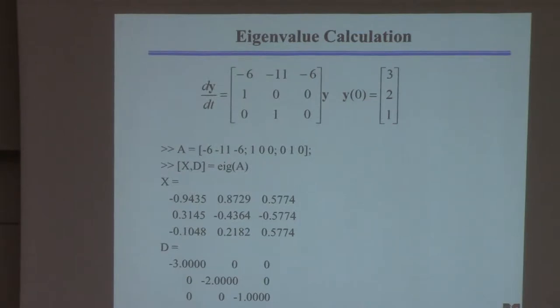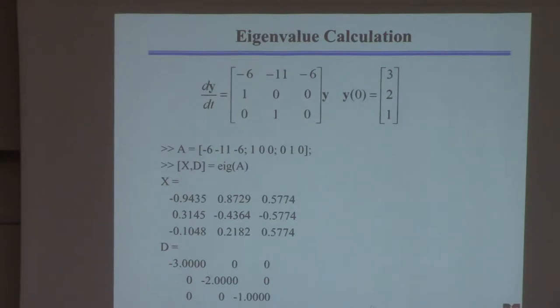The first thing I'm going to do is form the matrix A — that command obviously forms matrix A. Then I'll issue the eig command, which I taught you about a week ago. That function finds the eigenvalues and eigenvectors for a matrix. X is the eigenvector matrix — each column is one eigenvector — and D is the diagonal matrix with eigenvalues along the diagonal.